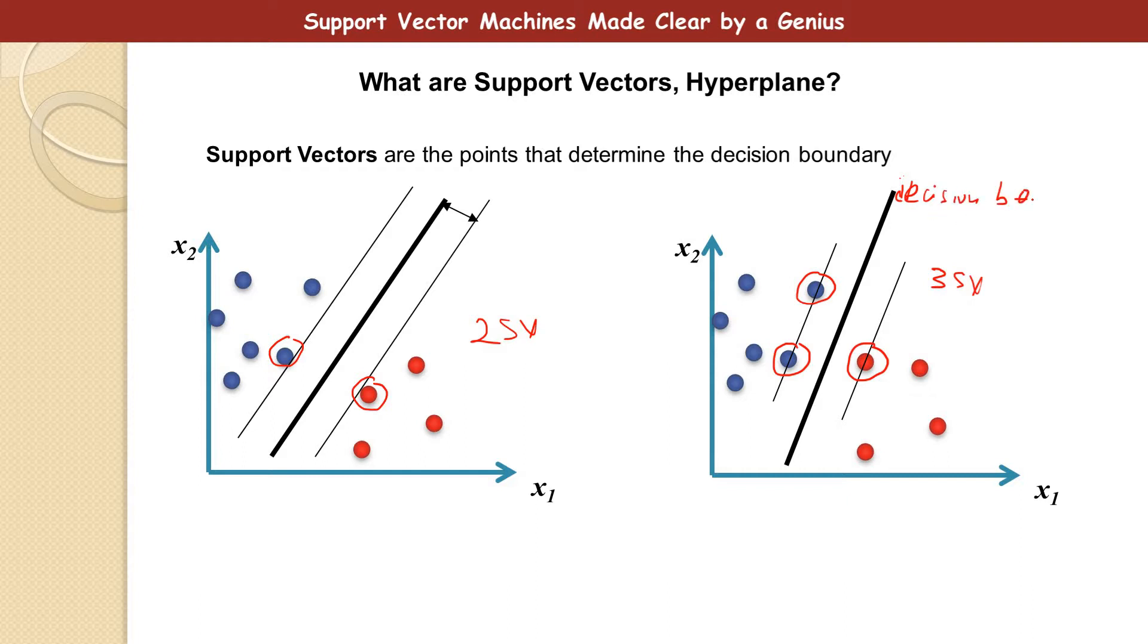So this is the decision boundary, and the lines parallel to it is called the gutters, and the support vectors are always in the gutters. Take notes. We are going to use this when we talk about the gutter constraint later.